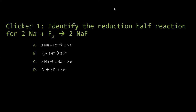The correct answer is fluorine. F₂ gains two electrons to become 2F⁻. Two zero plus two negative equals two negative — the charges are balanced. Going from zero to negative is reduction — reduction is gaining electrons. The other option showed zero plus two negative not equaling two positive — that is showing oxidation, which is the loss of electrons.